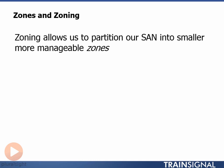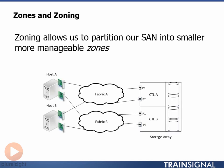Let's use a few pictures to paint the concept of zoning. On the slide we've got our mega simple SAN: two hosts, each with two HBA cards, and a single storage array with four front end ports, all of which are connected to dual redundant fabrics. Right now there's no zoning configuration in place, meaning that both fabrics are wide open — every device connected to Fabric A can see and log in to every other device on Fabric A, and the same goes for Fabric B.